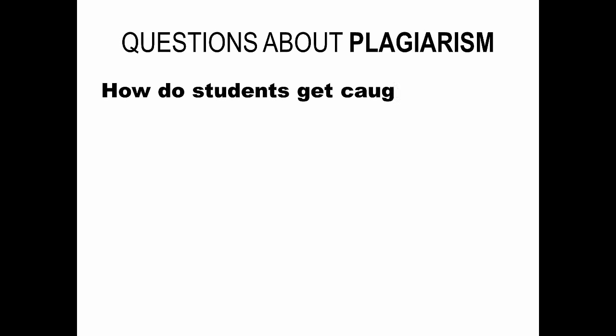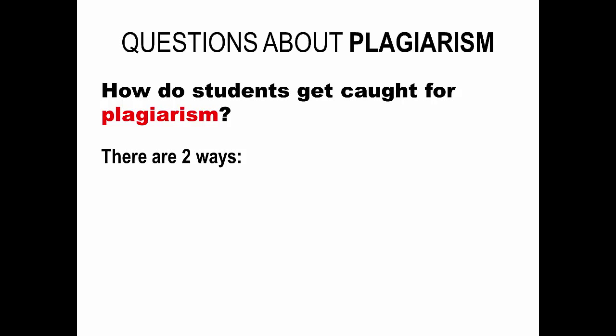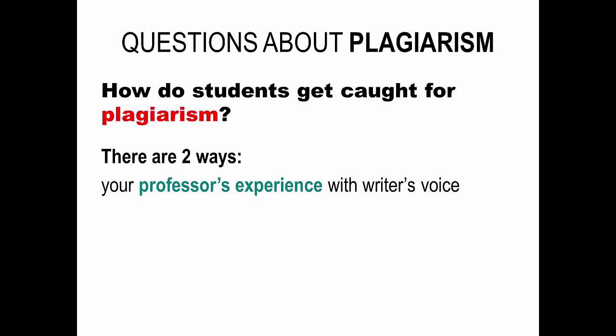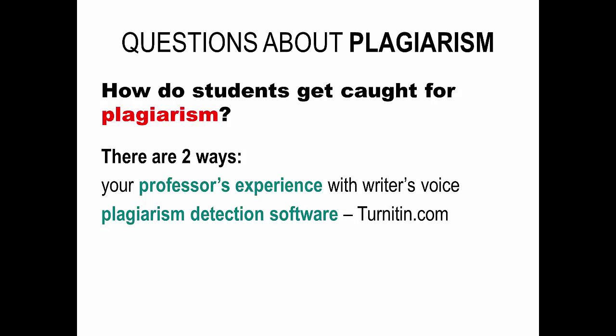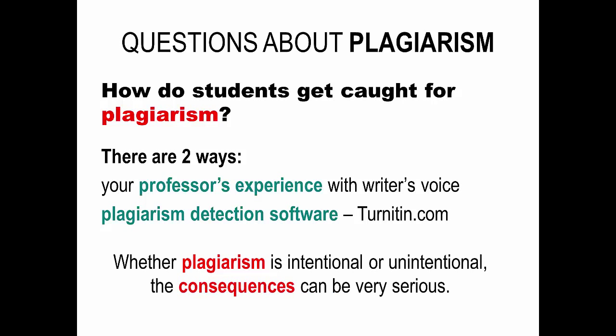How do students get caught for plagiarism? Plagiarism can be detected in one of two ways. The first way is with your professor's experience — they understand your writer's voice, which is the way you typically write. When your writing is different or your voice isn't coming through in the same way it normally does, your professor may be concerned that plagiarism has occurred. Another way plagiarism is detected is through plagiarism detection software. Durham College has a license to turnitin.com, a massive database that compares your submitted work to other student papers, books, articles, and billions of pages of internet content. The bottom line is, it doesn't really matter if plagiarism is intentional or unintentional — it can have very serious consequences.